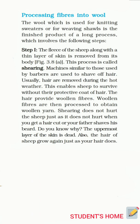Step one: the fleece of the sheep, along with a thin layer of skin, is removed from its body. This process is called shearing. Machines similar to those used by barbers are used to shave off the hair. Usually hair is removed during hot weather, which enables the sheep to survive without their protective coat. The hair provides woolen fibers, which are then processed to obtain woolen yarn. Shearing does not hurt the sheep, just as it does not hurt when we get a haircut.